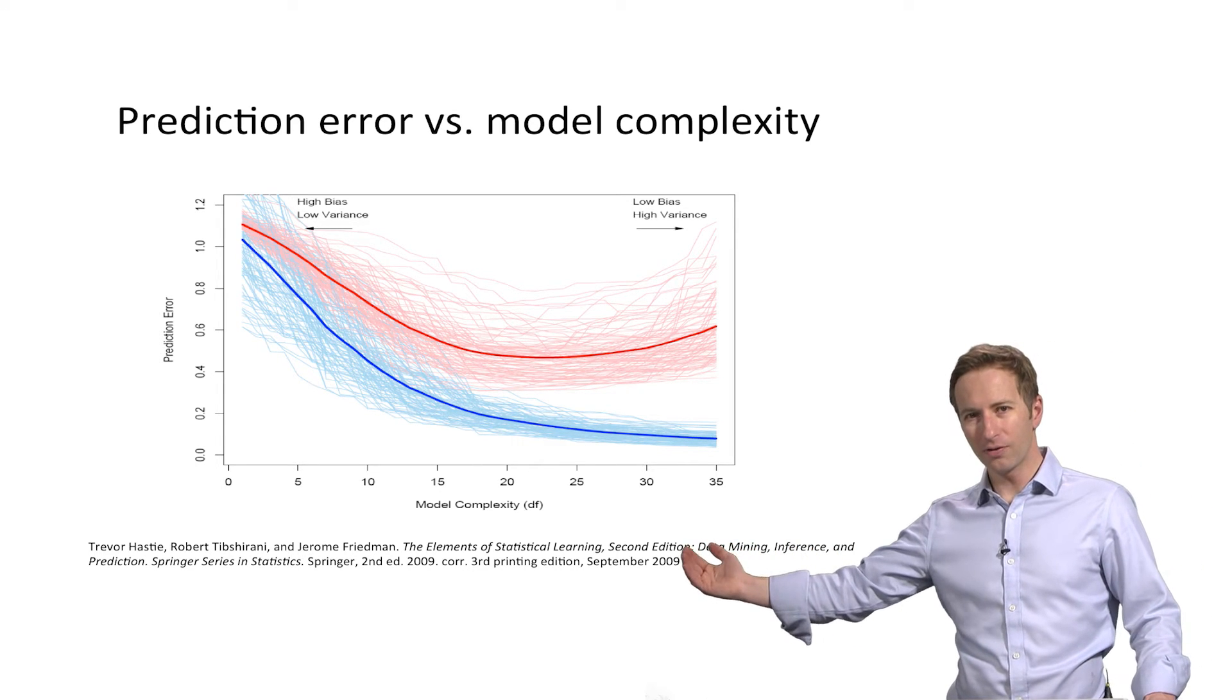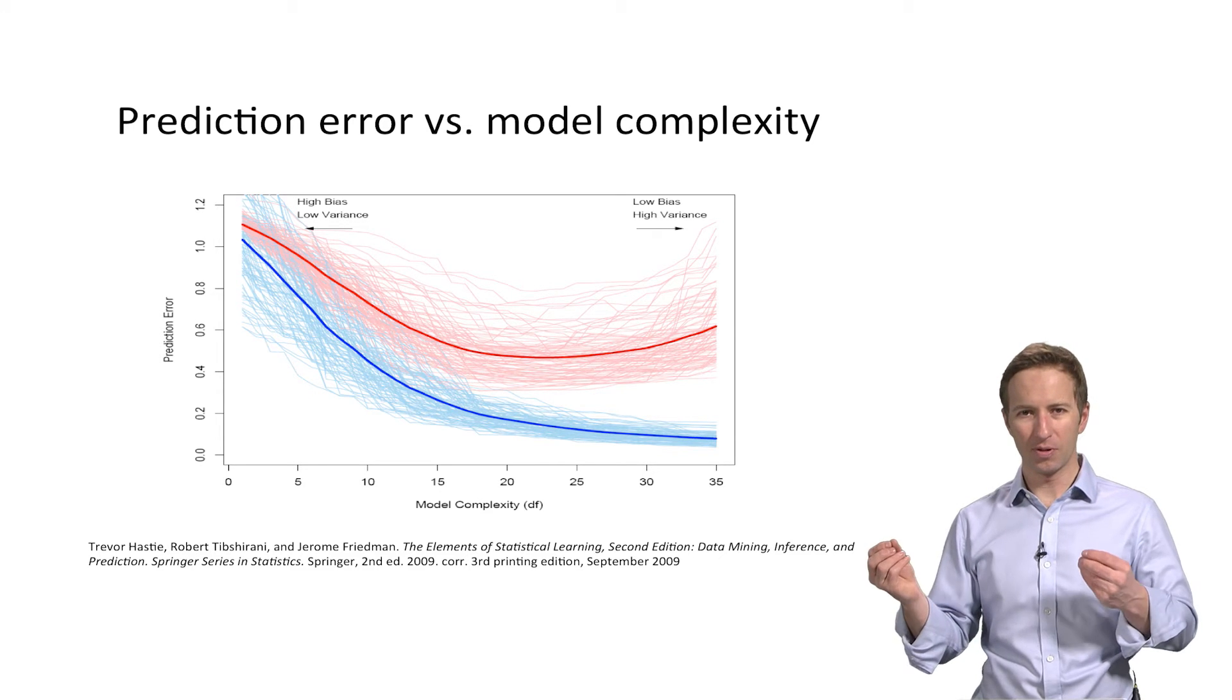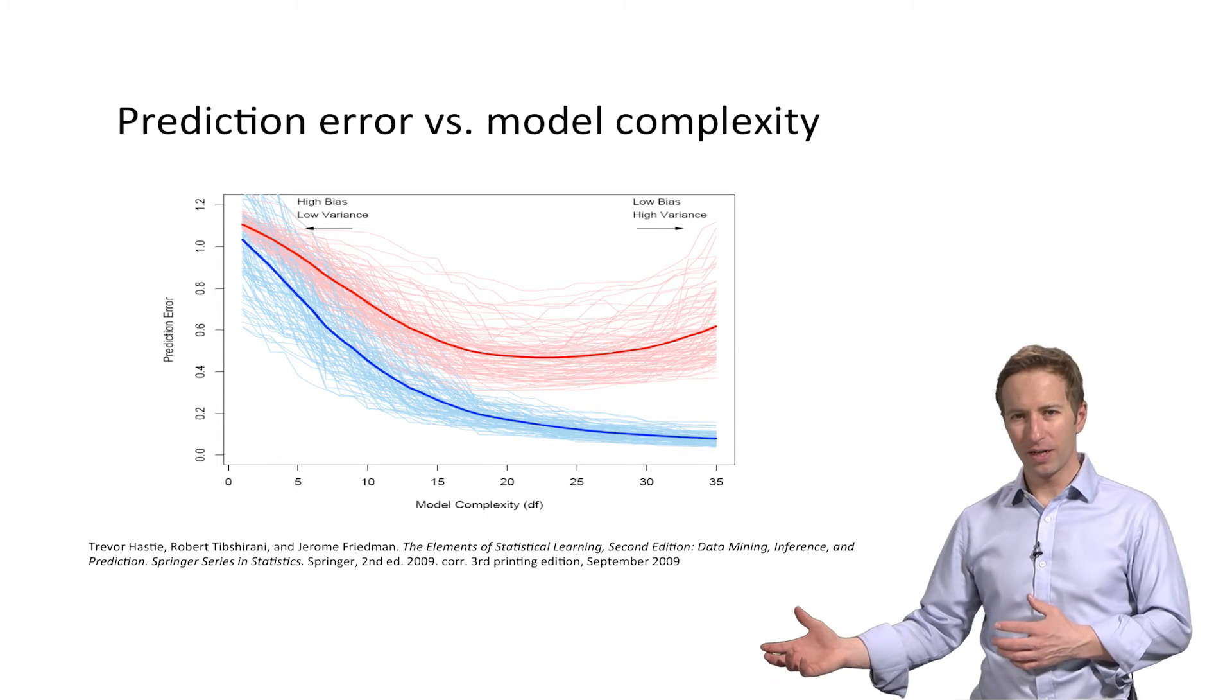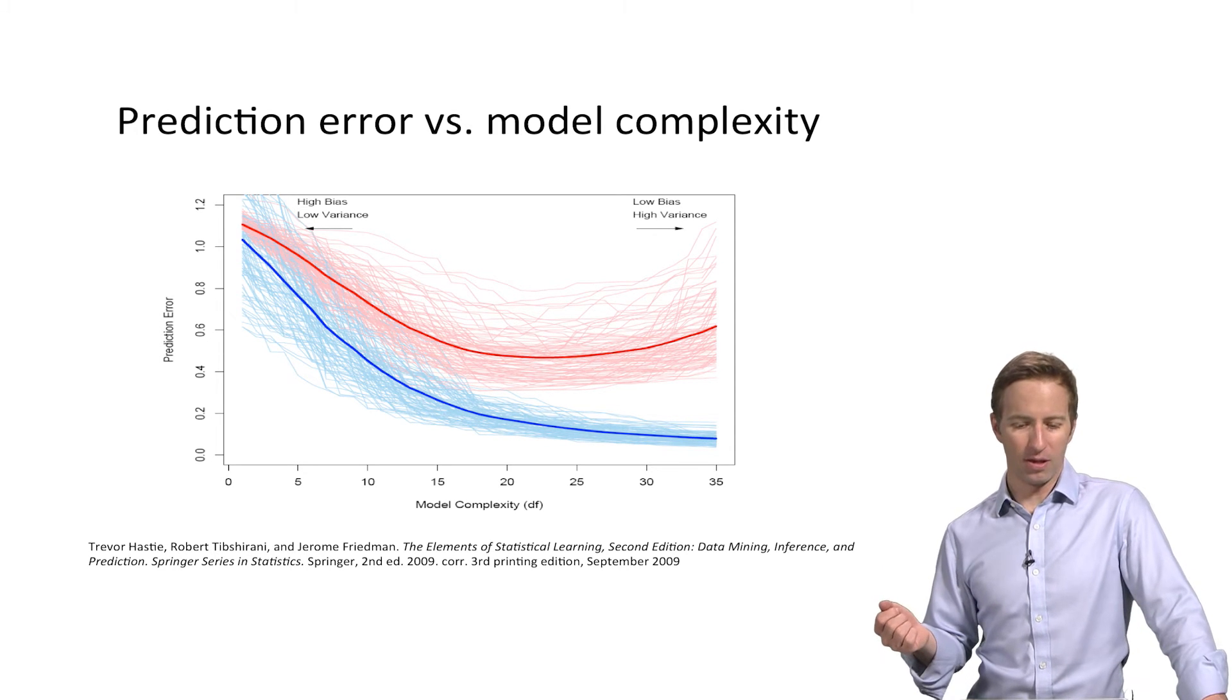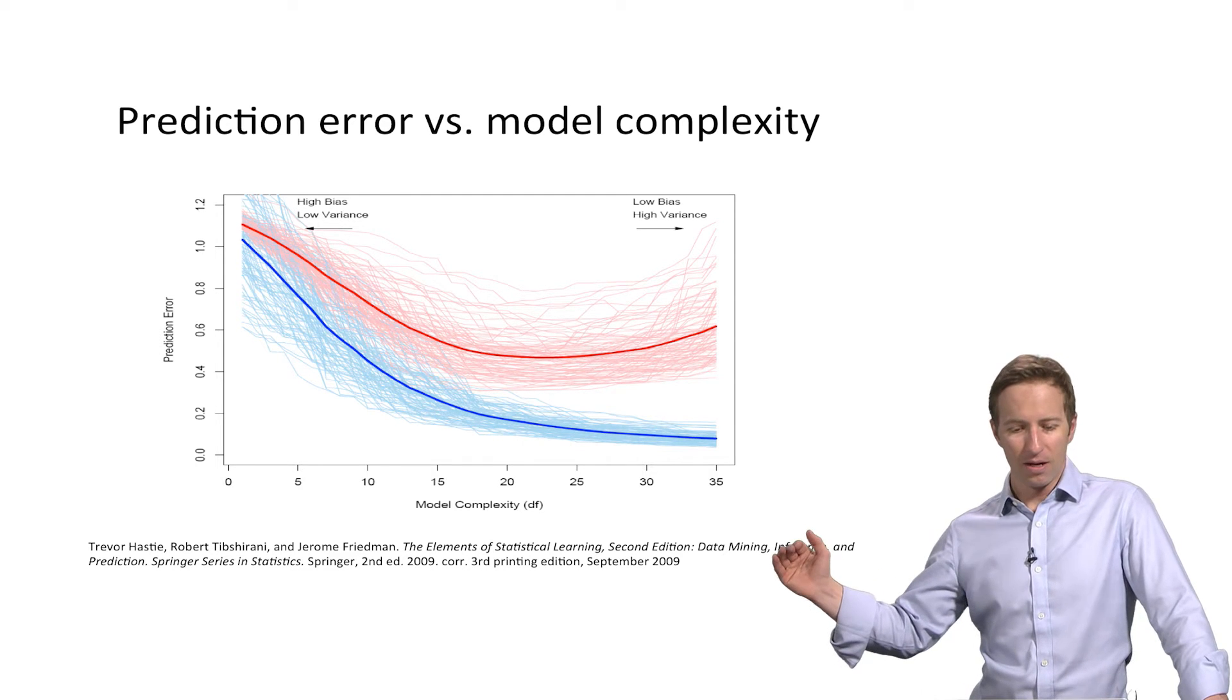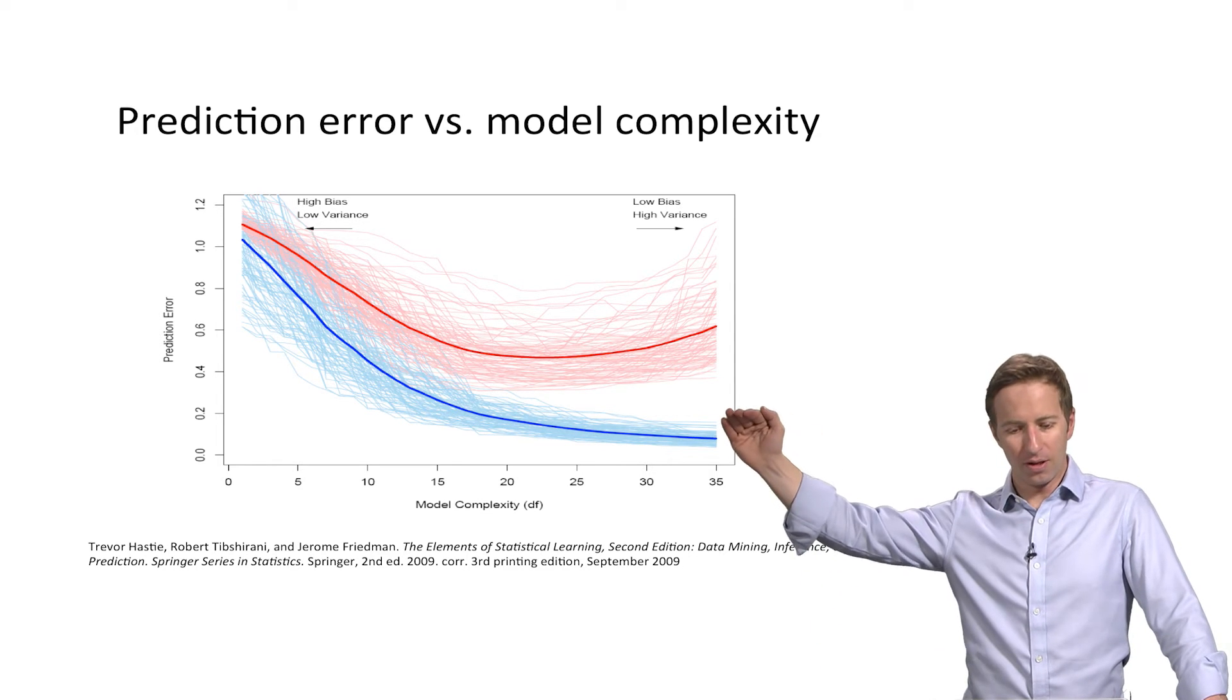And what happens is, if you go too far to the left, then you'll see that the model doesn't have enough flexibility to learn the associations between your independent variables and your outcome. So it doesn't fit your training data very well. And that's shown in blue. So that's the error on the training data. So basically, the model never gets low error rates, even within the training data that you're using to train the model. Then when you apply the model to hold out data, this is test data that it hasn't seen before, it also does poorly, of course. And that's shown in the error rate in the red line.